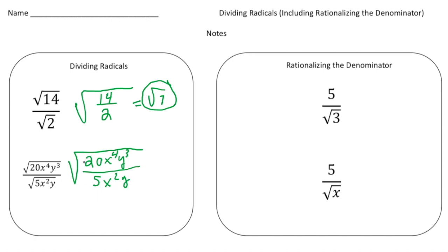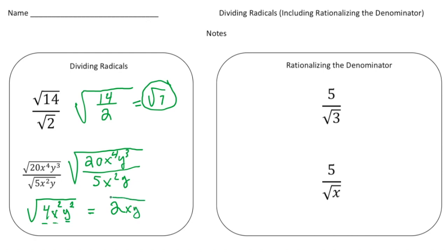Now we have to reduce this using the rules of exponents. 20 divided by 5 is 4. Then x to the 4th divided by x squared is x squared. And y to the 3rd divided by y is y squared. Now we simplify: we have the square root of 4x squared y squared. Each one of these is a perfect square — the square root of 4 is 2, the square root of x squared is x, and the square root of y squared is y. So the answer is 2xy.